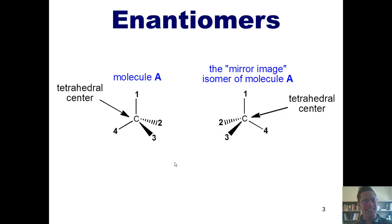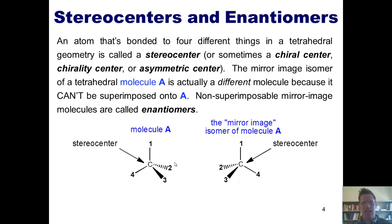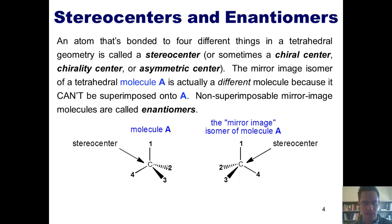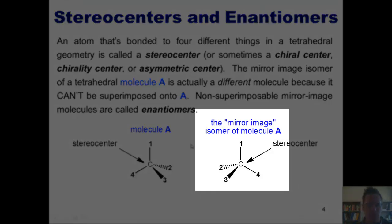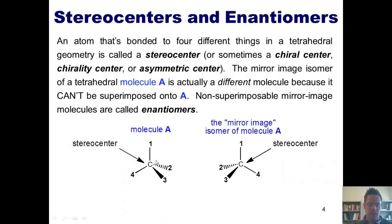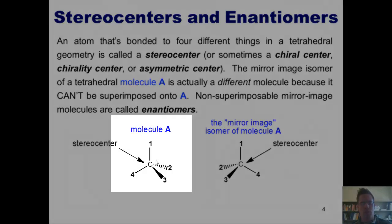I'm not going to answer that now, but we will momentarily. One thing I want you to know is that an atom — such as these carbon atoms shown in these two molecules — that's bonded to four different things in a tetrahedral geometry is called a stereocenter, and sometimes also called a chiral center, a chirality center, or an asymmetric center. Now, the mirror image isomer of molecule A is actually different because it can't be superimposed onto molecule A.